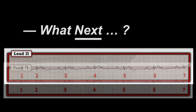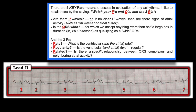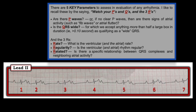Watch your P's and Q's and the three R's — this is my system for any rhythm. I can do this in real time; it doesn't slow you down, on the contrary it speeds me up. The beauty of this system is you sound like you know what you're doing, even if you're stalling. It gives you the five things you need to think of and prevents you from missing anything. Sometimes I don't know what the rhythm is, but if I can describe presence of atrial activity, QRS width, and the three R's, I've narrowed down my differential diagnosis.